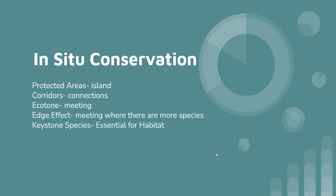Let's talk about in situ conservation — these are protected areas. How would we design one? We'd want corridors: connections between areas so that animals don't have to cross roads. We want a meeting area, an ecotone where different animals within the area can come together. We want some edge effect — you don't want the habitat to be completely homogeneous; you want areas that change so you can have different conditions. And you want keystone species, those which hold the area together and maintain the habitat.